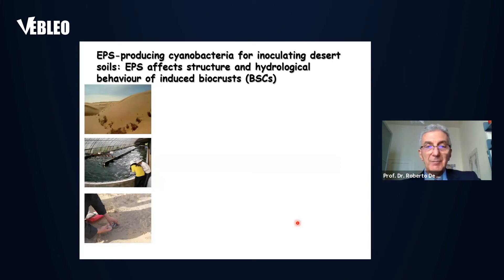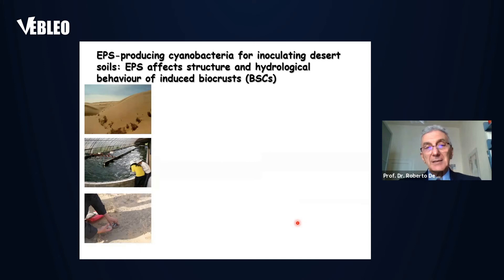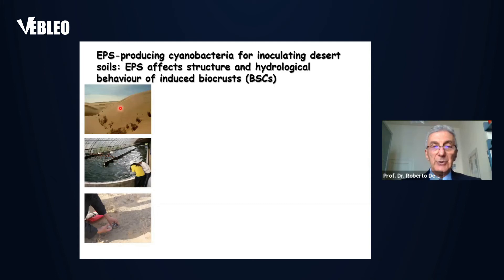Another environmental application we started in the last 10 years is the use of polysaccharide-producing cyanobacteria for inoculating desert soils. These studies were started at the beginning of the century by a Chinese group headed by Professor Liu Yongding. We collaborated with him a few years after he started the studies. They cultivate large volumes of EPS-producing cyanobacteria and inoculate them on sand dunes. After a few weeks, they start observing the development of a biocrust — a biological soil crust.